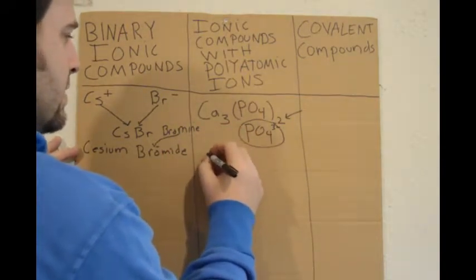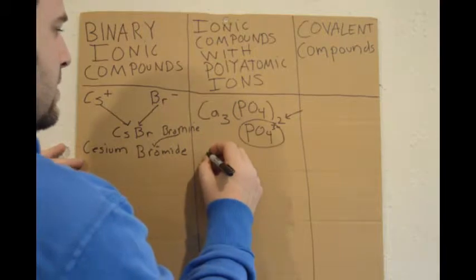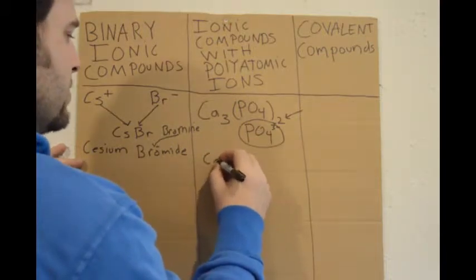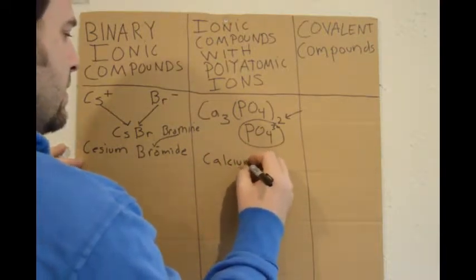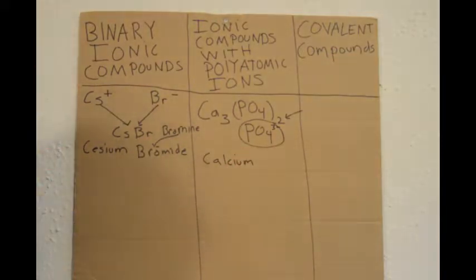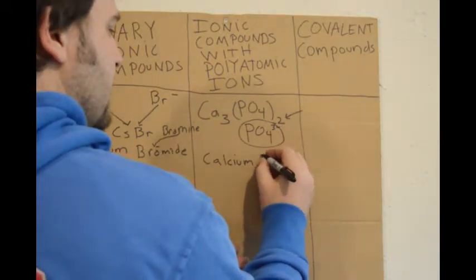Now, to name these compounds, you simply write the name of the metal just like you did before, and just name the polyatomic ion second. So it's calcium phosphate.